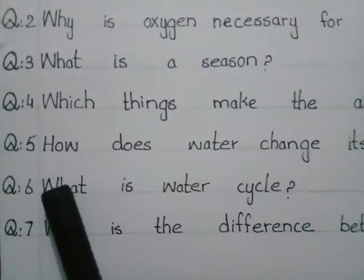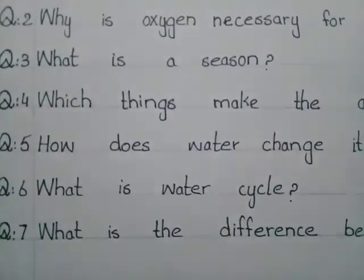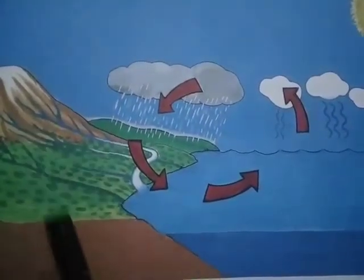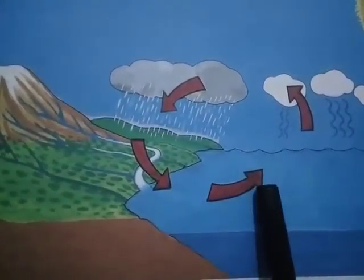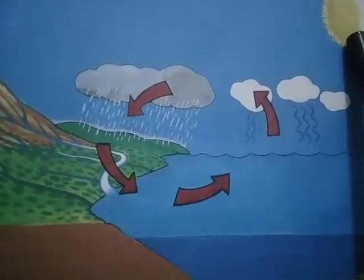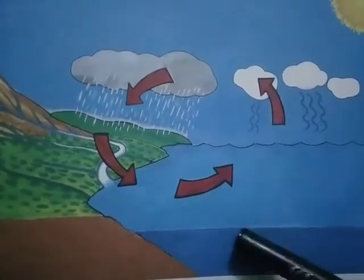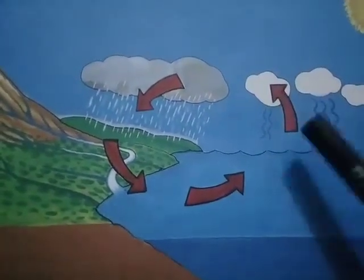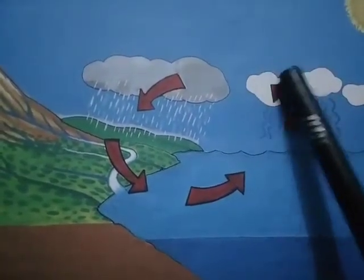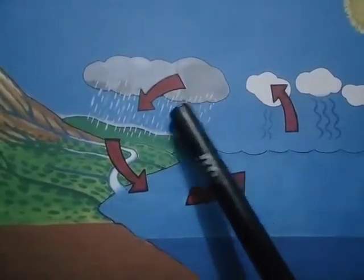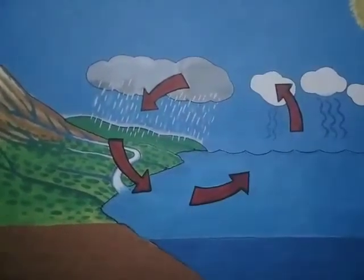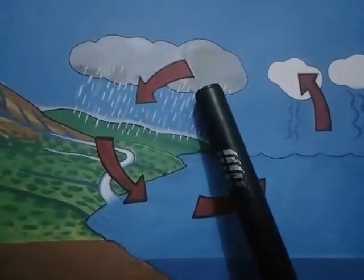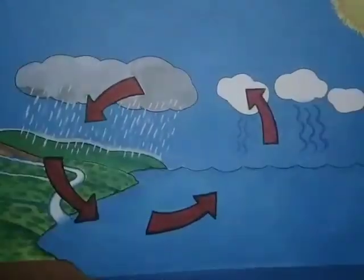Question number 6 is: what is the water cycle? Water evaporates from oceans, rivers, ponds, and streams due to the heat of the sun. Evaporation puts water vapors into the air. When the air cools, the vapors change into tiny drops of water. Clouds are drops of water formed on dust particles.